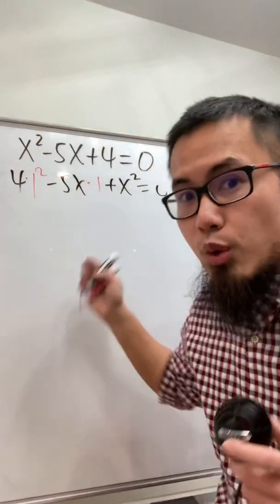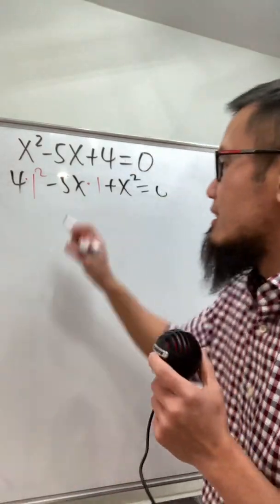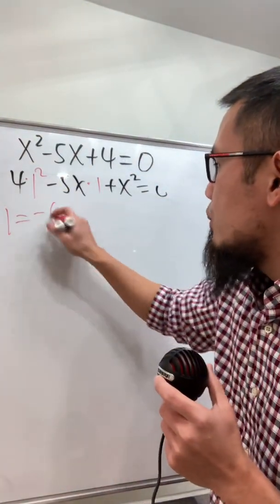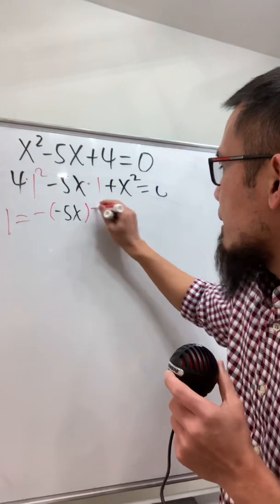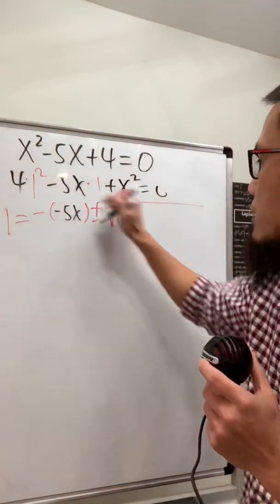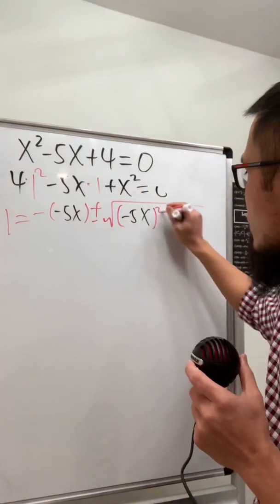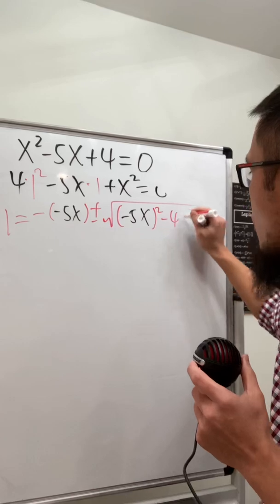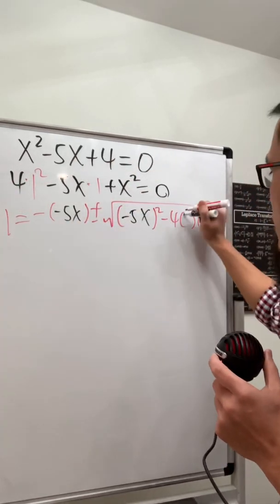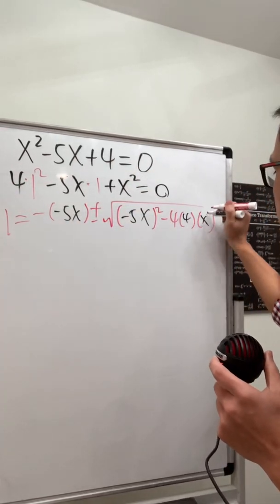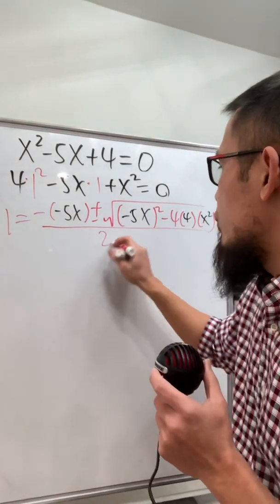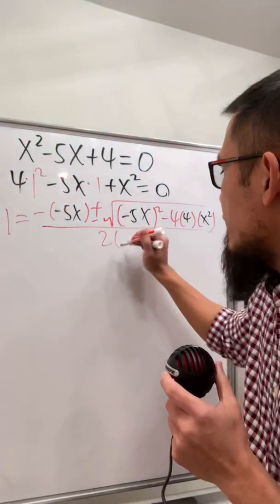Now we have a quadratic equation in terms of 1. We can use the quadratic formula. So we see 1 is equal to negative b, which is negative 5x, and then plus or minus, open the square root — b squared, which is negative 5x squared, and then minus 4ac. a is 4 and c is x squared. So let's go ahead and put them down right here and divide everybody by 2a — 2 times 4.